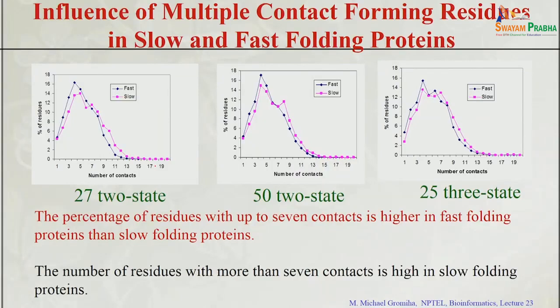We have discussed different features: contact order, long-range order, and multiple contact index. Looking at whether there is a difference in fast and slow folding proteins based on number of contacts — x-axis is number of contacts, y-axis is percentage of residues — we see that up to 7 contacts, the percentage is higher in fast folding proteins, and after that it is higher in slow folding proteins. Slow folding proteins have more contacts than fast folding proteins across multiple datasets.